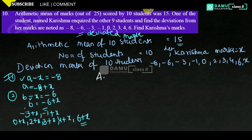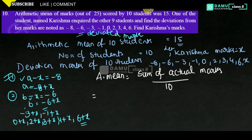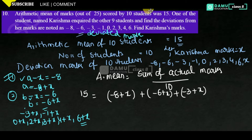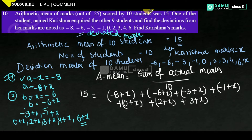Now take the arithmetic mean of 10 students: sum of actual marks divided by number of students, that is 10. The sum of actual marks is: (minus 8 plus x) + (minus 6 plus x) + (minus 3 plus x) + (minus 1 plus x) + (0 plus x) + (2 plus x) + (3 plus x) + (4 plus x) + (6 plus x), all divided by 10.